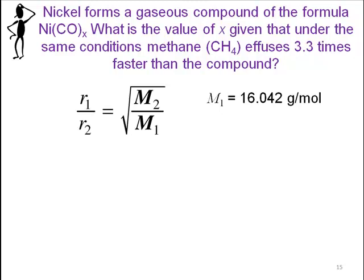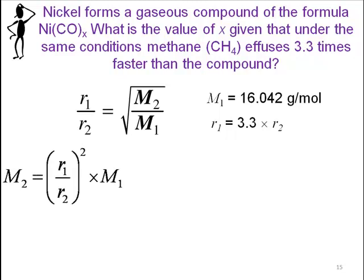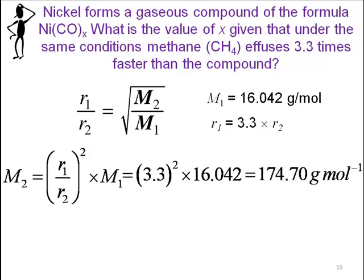What's going to be the rate of methane? The rate of methane is 3.3. What would be the rate of the other gas? One, to make it easy - you can obviously put something else if you want to make it harder on yourself. So the rate here is 3.3 times R2. With our math here, we've got R1 and R2: 3.3 squared times 16.042, and that equals 174.7 grams per mole.